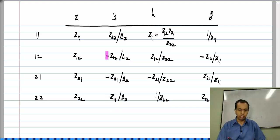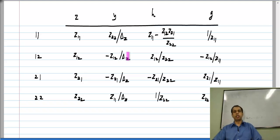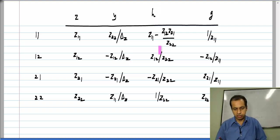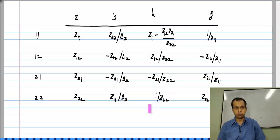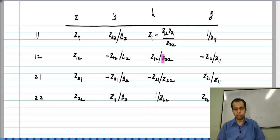The point is you can clearly see that if Z12 equals Z21, then Y12 will also be equal to Y21. It is not that a circuit is reciprocal in Z parameters but not in Y parameters or other parameters. Similarly, for H parameters: H12 is Z12 divided by Z22 and H21 is minus Z21 divided by Z22. So clearly if Z12 equals Z21, then H12 will be minus H21. That is the reciprocity condition in terms of H parameters.